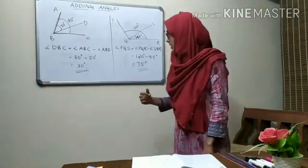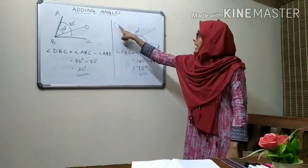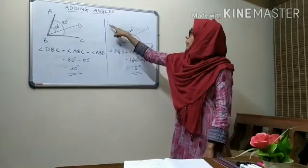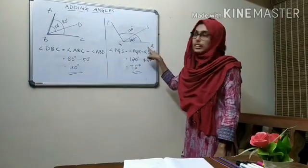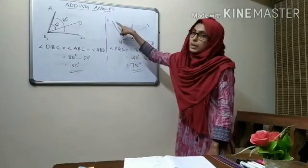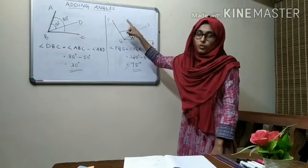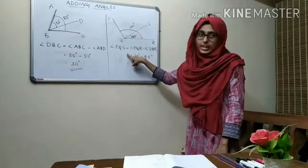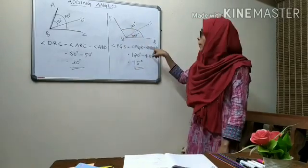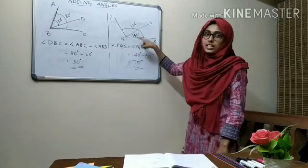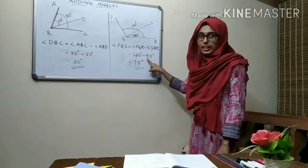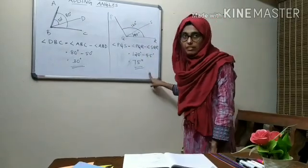Now another example: you can see a big angle PQR and small angles PQS and SQR. Here you want to find angle PQS. That is equal to angle PQR (the big angle) minus angle SQR (the small angle). We have the big angle 120 degrees minus 45 degrees — you will get 75 degrees.